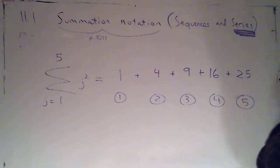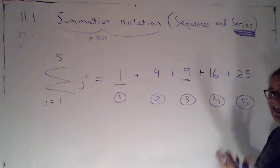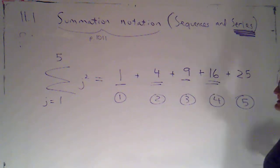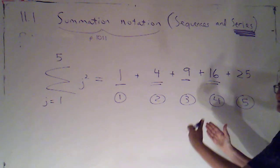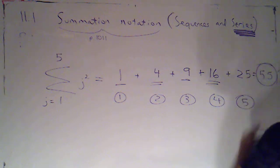And then I can do the addition. Now, I know that order doesn't matter with addition. So I'm sort of noticing that one plus nine is ten. Four plus sixteen is twenty. Ten plus twenty is thirty. Plus twenty-five. That would be fifty-five.